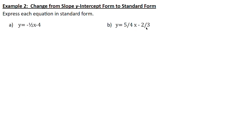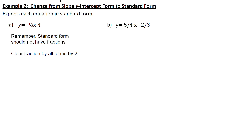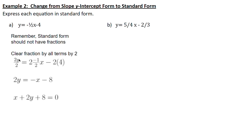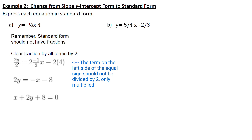For equations with fractions, standard form should have no fractions. We clear the fraction by multiplying all terms by 2. Multiplying y equals negative one half x minus 4 through by 2 gives 2y equals negative x minus 8, which rearranges to x plus 2y plus 8 equals 0.